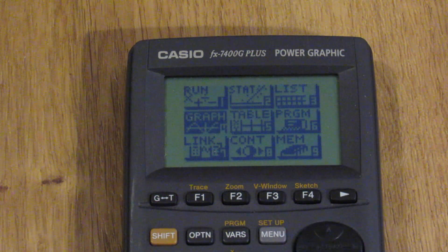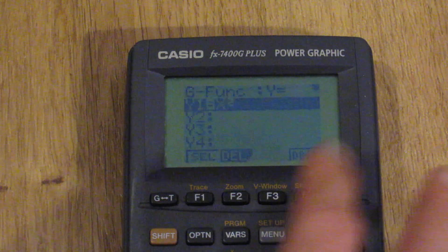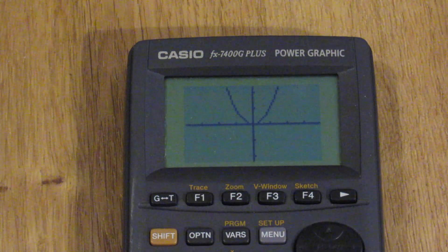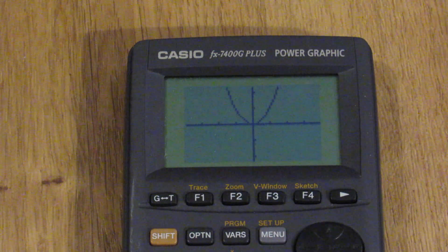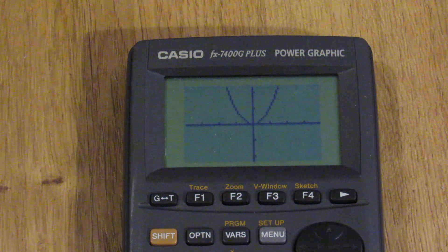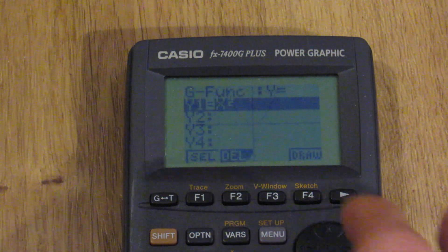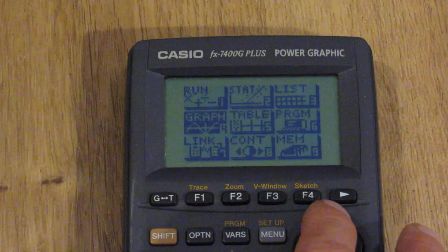We'll go ahead and quit there. Go to menu and then show you graph. And that's what took up so much RAM. Just a parabola, Y equals X squared drawn there. I'll go ahead and quit and go to the menu again.